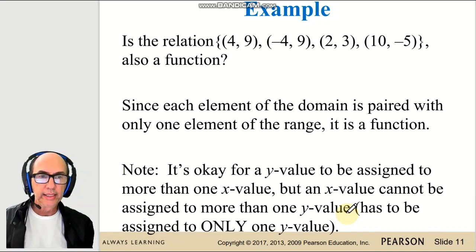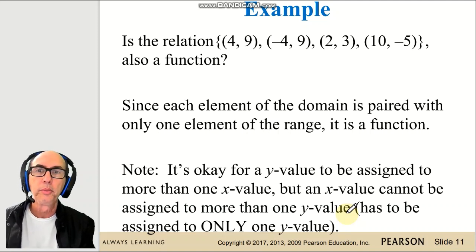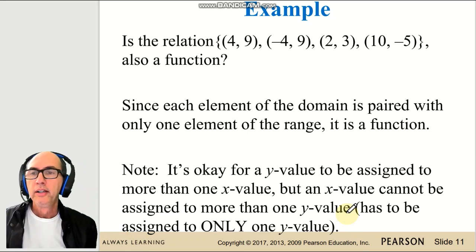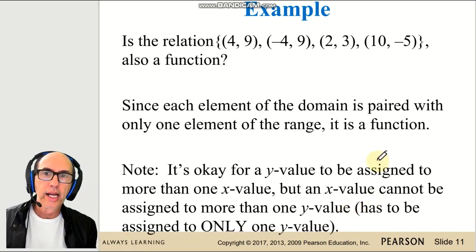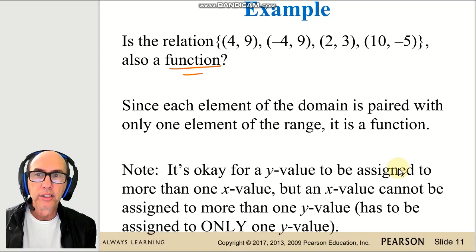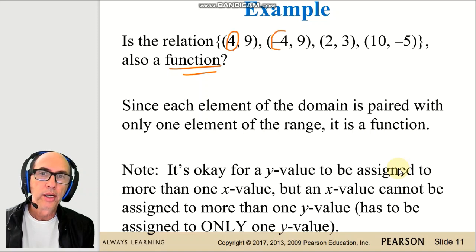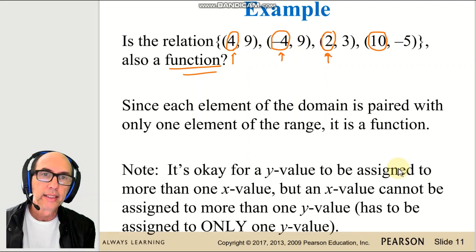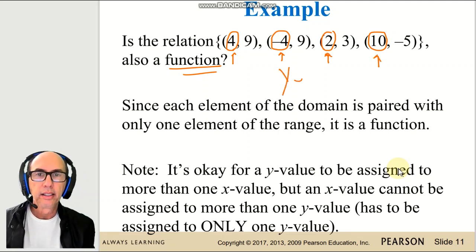Machines or devices take one input and give one output. Now the question is: is the relation {(4, 9), (−4, 9), (2, 3), (10, −5)} also a function? Check if for each x you have only one y. We don't have any x repeated — only different x's — so yes, it is a function. For each input, only one output.